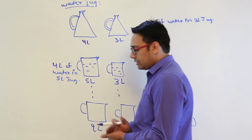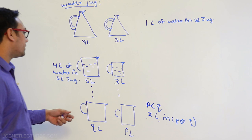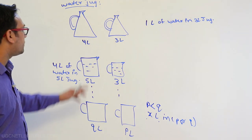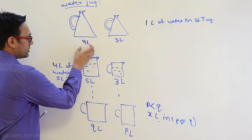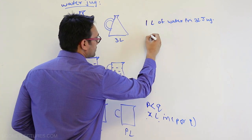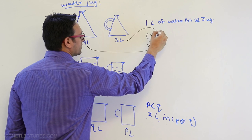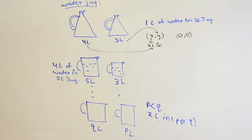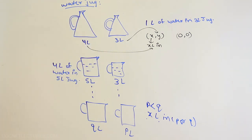Now you understand the problem. Can you find some steps to reach from the initial state to the final goal? Let us continue with the first problem — the four liter and three liter jug problem. We represent the state as a pair (x, y), where x is the liters of water in the first jug and y is the liters of water in the second jug. Initially both jugs are at (0, 0) — zero liters each — and we want to reach a final goal where there is one liter of water in the three liter jug.